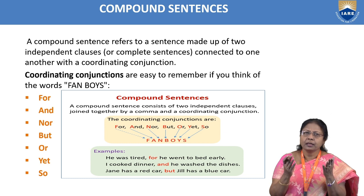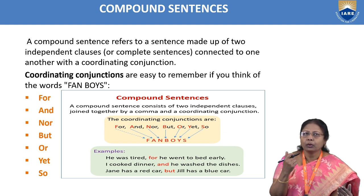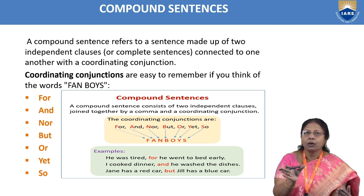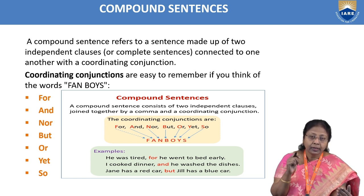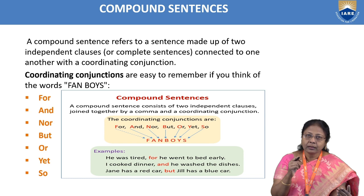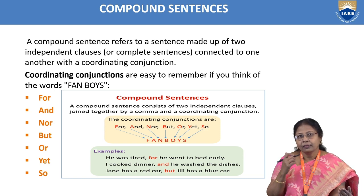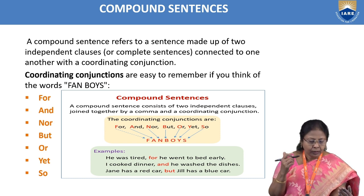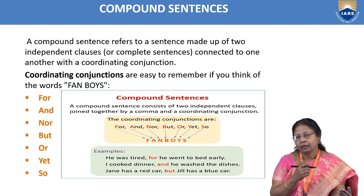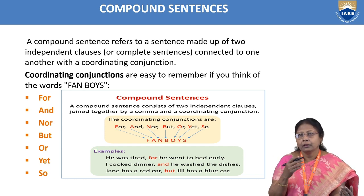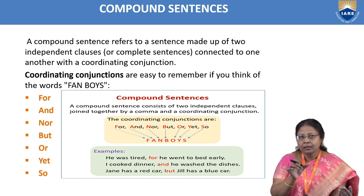There are many coordinating conjunctions, but only a few are used in compound sentences. They are: for, and, nor, but, or, yet, so. These are very difficult to remember, but I have given a small clue. We call these coordinating conjunctions FANBOYS.